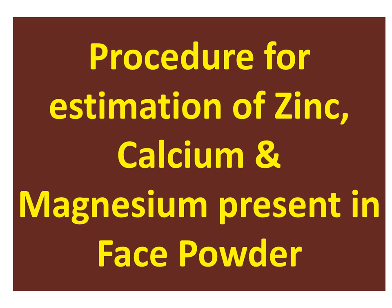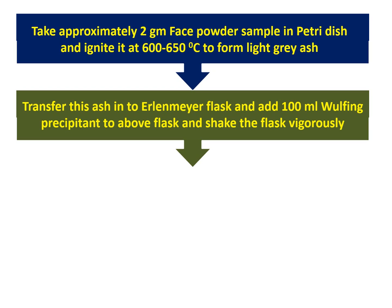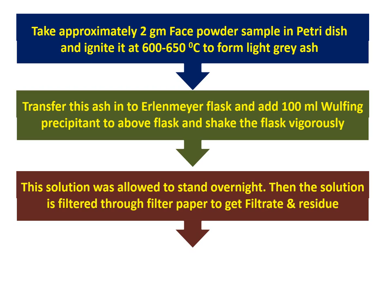Now we will see the procedure for estimation of zinc, calcium and magnesium in base powder. Take approximately 2 grams of face powder sample in a petri dish and ignite it at 600 to 650 degrees centigrade to form a light grey ash. Transfer this ash into a conical flask and add 100 ml of pulping precipitant. Shake the flask vigorously and allow the solution to stand overnight.